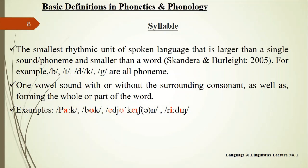A syllable is the smallest rhythmic unit of spoken language — larger than a single sound and smaller than a word. It has at least one vowel sound, with or without surrounding consonants, forming the whole or part of a word. A syllable is a group of one or more sounds with a nucleus; the vowel sound serves as the nucleus. Examples include: park, book, education, and writing.